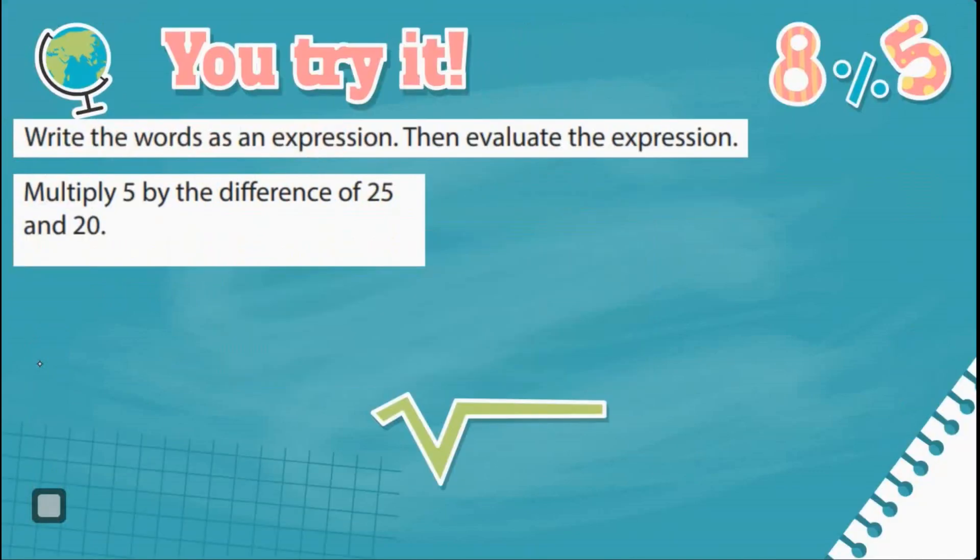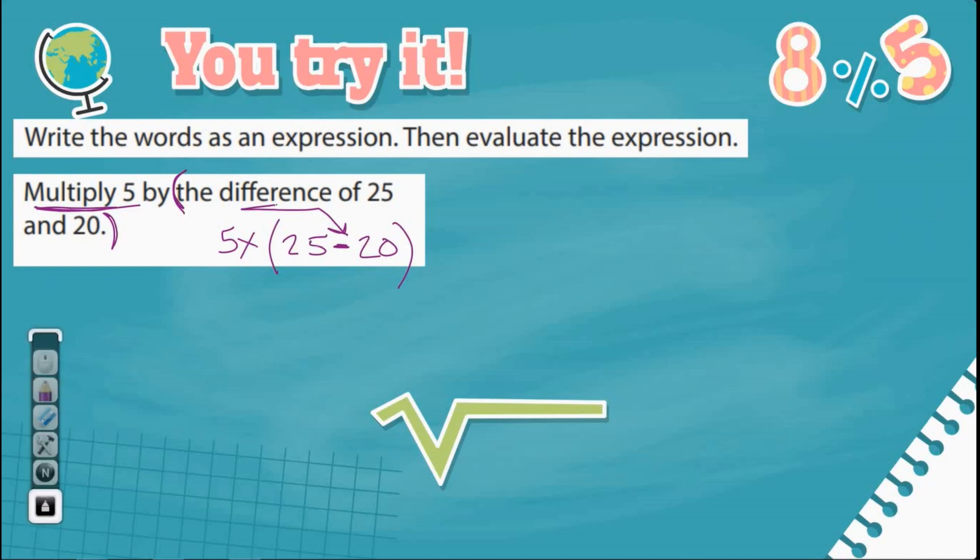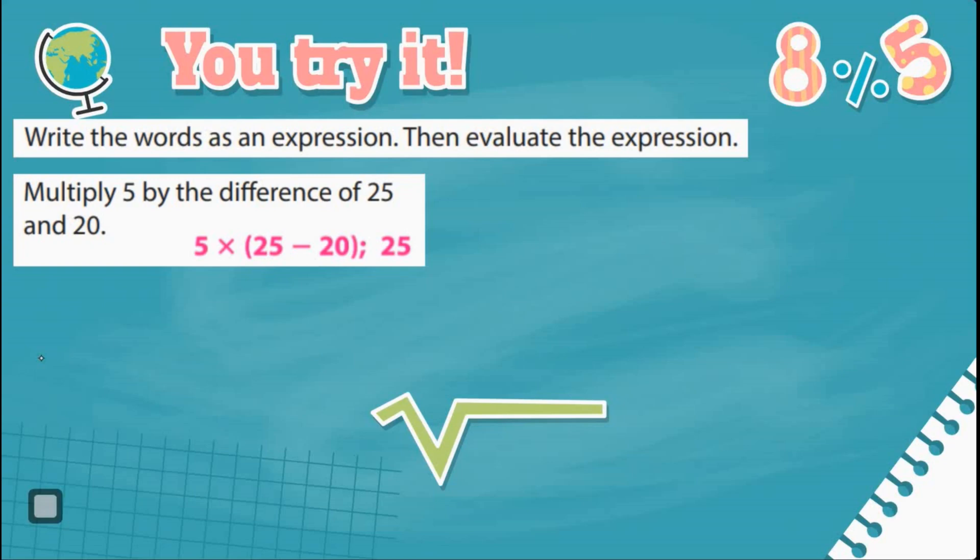Write the words as an expression, then evaluate the expression. Let's read it together. Multiply 5 by the difference of 25 and 20. So I could have 5 multiplied by 25 minus 20. How did I get minus or subtraction here? Because it says difference. That difference means to find the difference of something. I'm going to subtract. So 5 times 25 minus 20. And it gives you 25. Because 25 minus 20 is 5. 5 times 5 is 25.